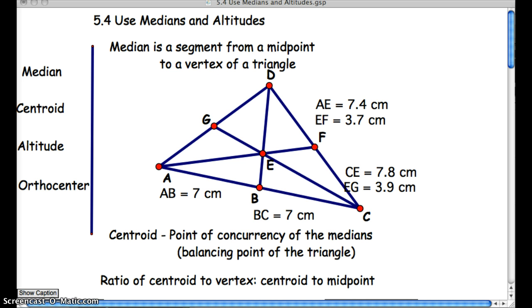A median is a segment from a midpoint to a vertex of the triangle. A little complicated at first if you're just kind of listening to the surface. The median is a segment from the midpoint. So if G is the midpoint of AD, it is a segment from the midpoint to a vertex. So from here to C, right? So this is a median. G to C is a median.